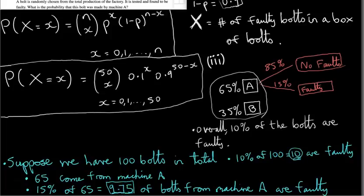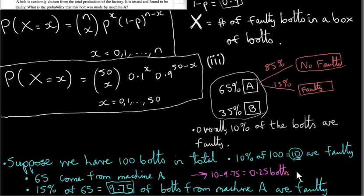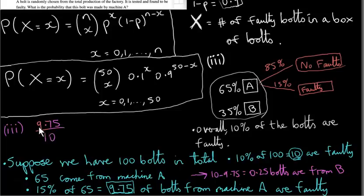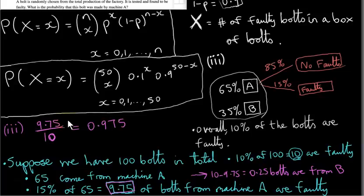The remainder must come from machine B: 10 minus 9.75, which is 0.25 bolts from machine B. To answer the question, we put the number of faulty bolts from machine A, which is 9.75, over the total number of faulty bolts from the factory, which is 10. Dividing, we get 0.975. This is the easiest way to understand this kind of conditional probability problem — just pick 100 and do counts.